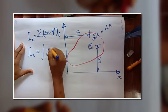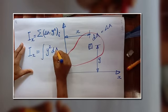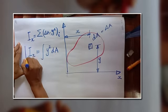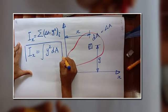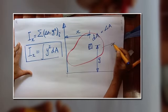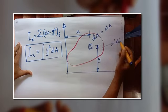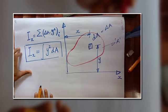Let me write the y first, y square into dA. So this is the equation for moment of inertia of the area A. The whole area is actually, the total area is A, y square dA.